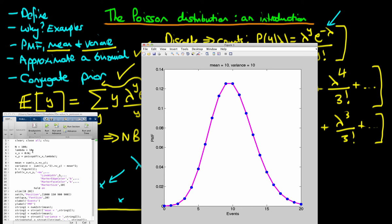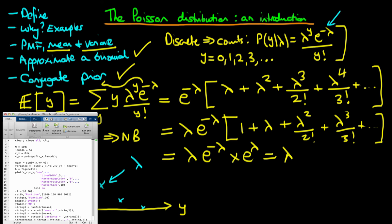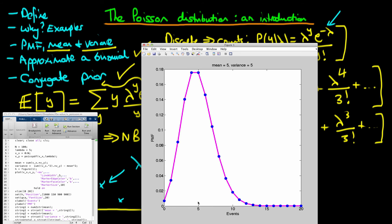The theoretical mean is 10 and the theoretical variance is also 10, which corresponds very closely to the actual mean and variance calculated from this distribution. If we decrease lambda to 5 and rerun, the distribution shifts so that its main support is now around 5.